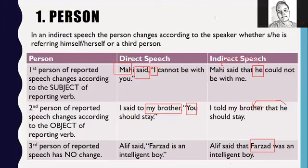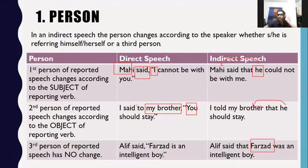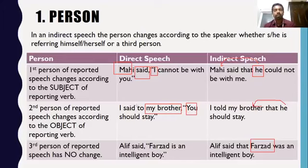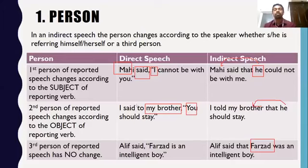A student further asked: if Farjad is still alive, why do we use 'was'? Because 'Alif said' shows the event happened before — the reporting verb 'said' shows that the saying happened in the past. In the direct speech, 'Farjad is' is in present tense because you are quoting the original speech. But if you said this at the present moment, you would say 'Shafkat says Farjad is an intelligent boy' and then you wouldn't have to change the verb.